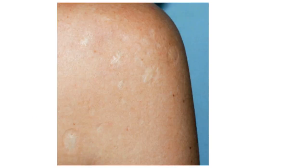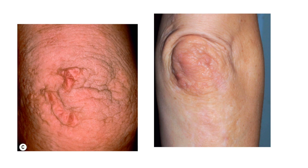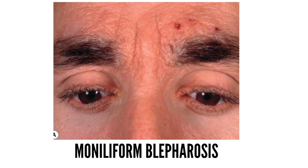This image shows multiple round hypopigmented and depressed scars on the shoulders. In the late stages, there is an increase in hyaline deposition within the dermis. The skin becomes diffusely thickened and waxy, developing a yellowish color. Papules, plaques, and nodules appear on the face including the eyelid margin, as well as in the axilla and on the scrotum. The characteristic beaded papules along the margin of the eyelids are called moniliform blepharosis — the word 'moniliform' means resembling strings of beads.